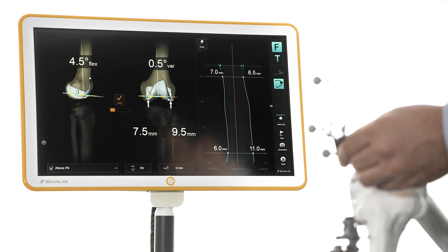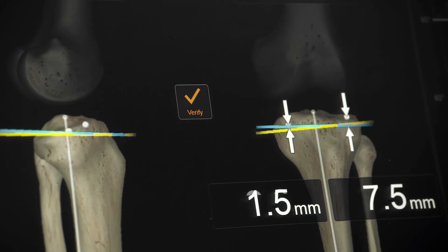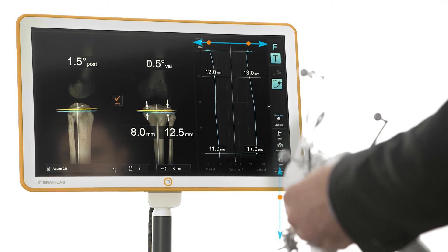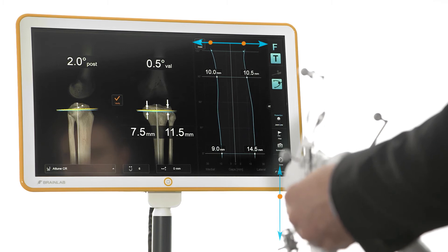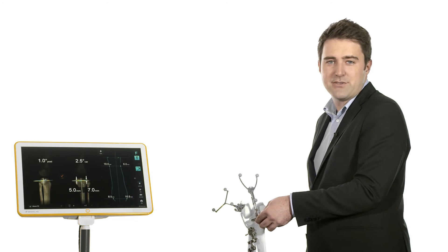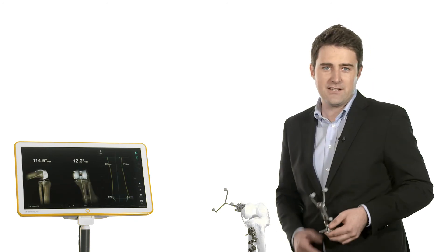After verifying the first resection, the surgeon can decide how to proceed, for example, with the tibial resection. Without any system interaction, the software displays the respective view and the cutting block can be placed. This patient-specific navigation allows the surgeon to foresee the outcome of final joint stability based on the implant geometry and according to previously verified cuts.